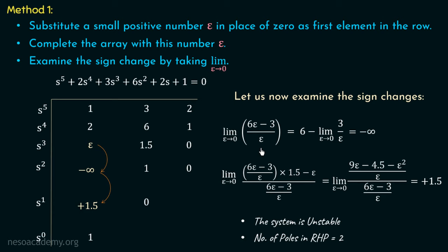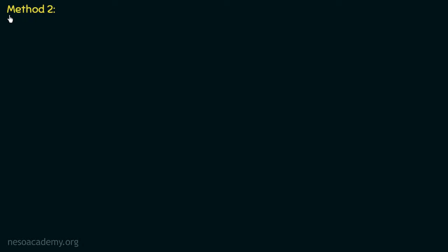The system is unstable, and the number of sign changes equals the number of poles in the right half of the S-plane. So the number of poles in the right half of the S-plane equals 2. We have examined the stability using Method 1, substituting epsilon in place of 0.